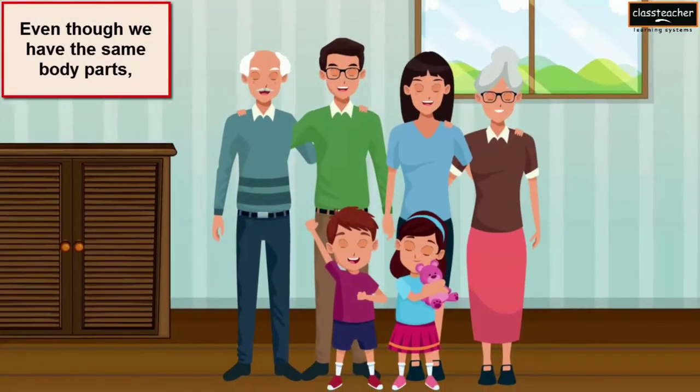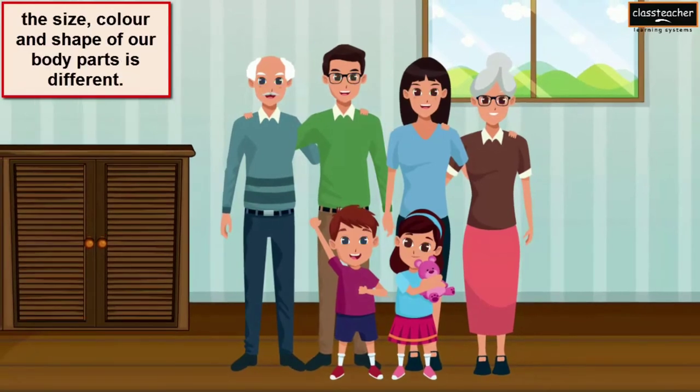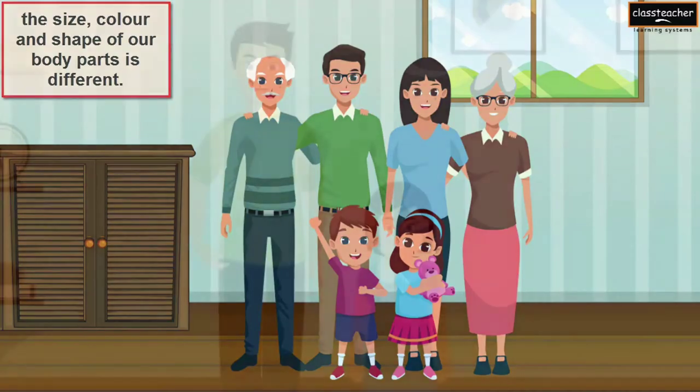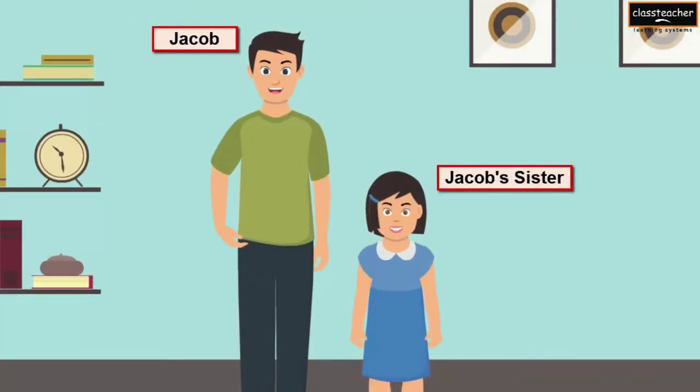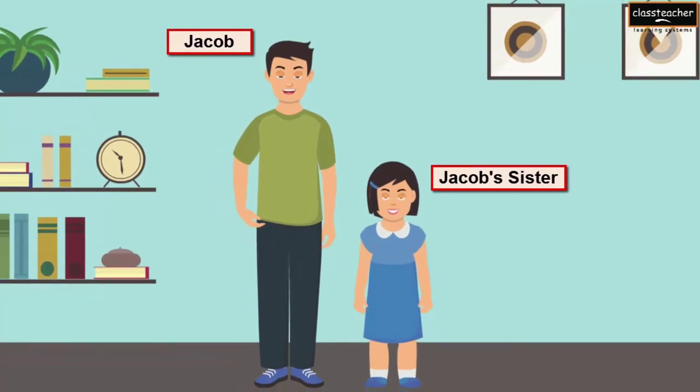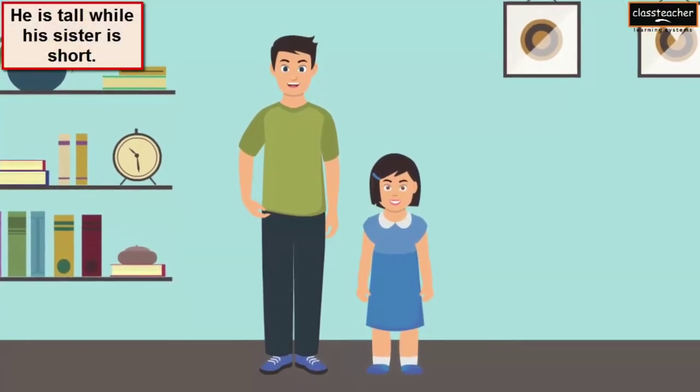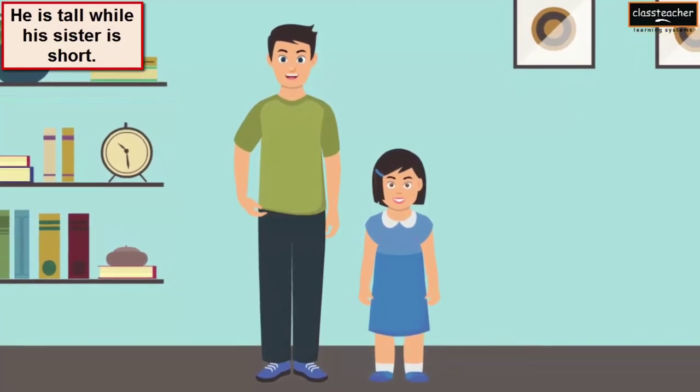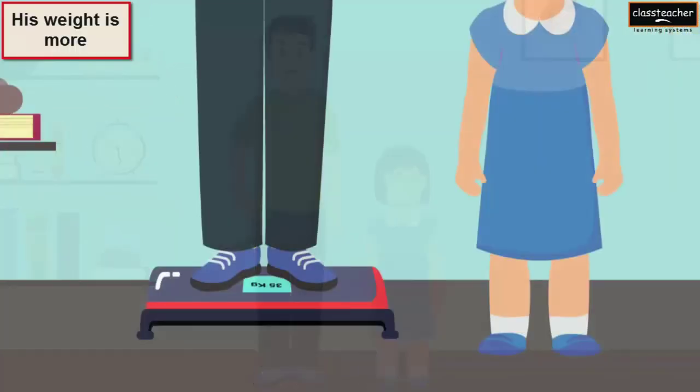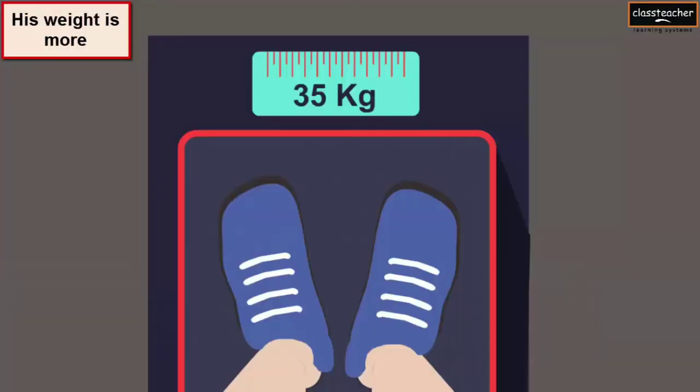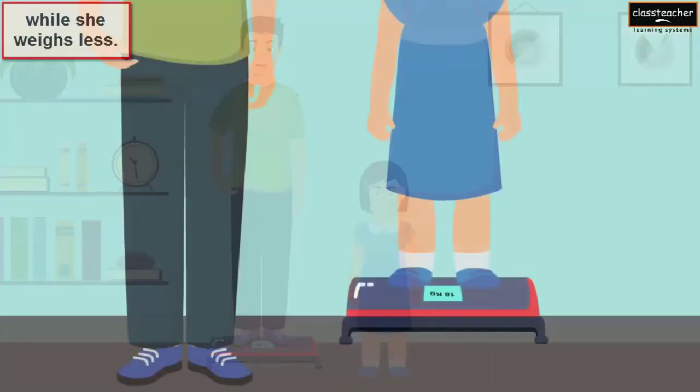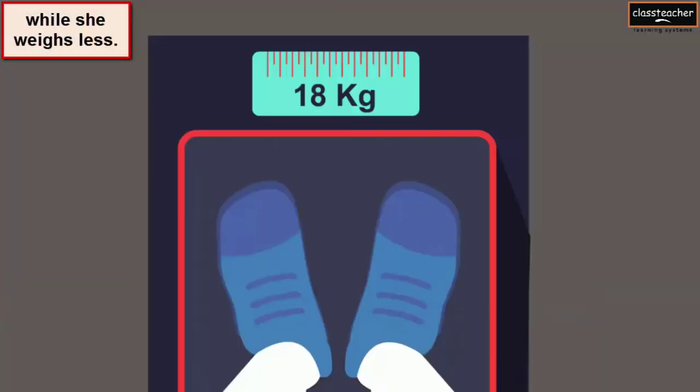Even though we have the same body parts, the size, color and shape of our body parts is different. This is Jacob. This is Jacob's sister. He is tall while his sister is short. His weight is more while she weighs less.